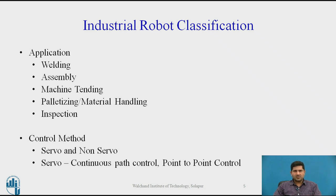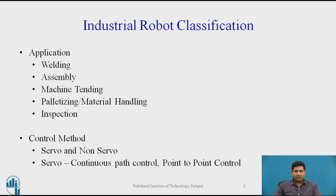Another way of classifying is from application — you have welding robots, assembly robots, material handling robots, inspection robots and so on. Another classification, popular in the past, was by control method: servo and non-servo robots, and among servo robots, continuous path control and point-to-point control. This classification is somewhat redundant today given that almost every robot made today has sophisticated closed-loop servo control systems. Most textbooks include it from an academic perspective.